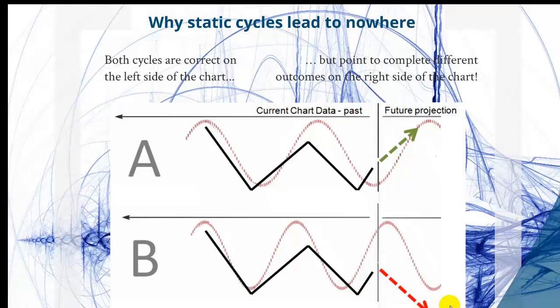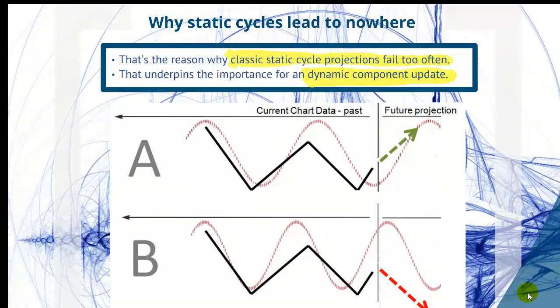On the left chart, we clearly have a quite similar cycle detected which is the same dominant cycle, but if you move over to the right side for our projection for trading, we get quite different projections. This is exactly the reason why classic static cycle projections fail too often.